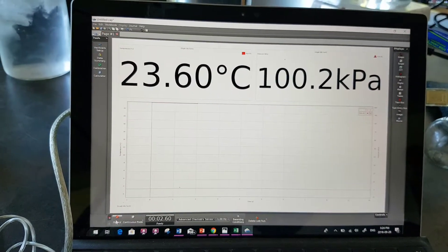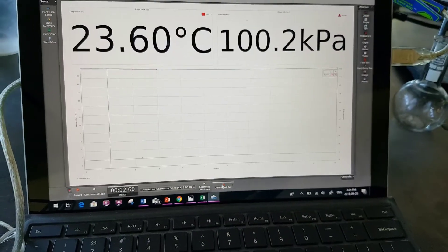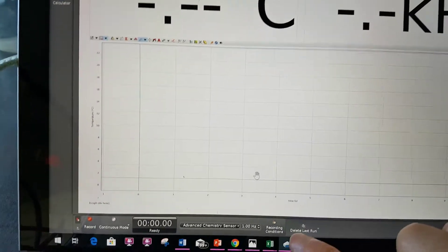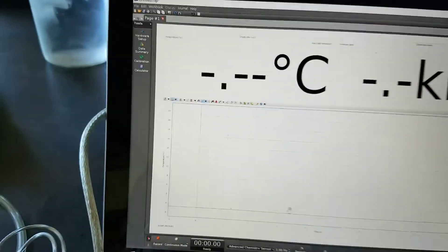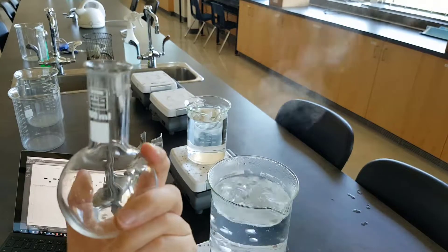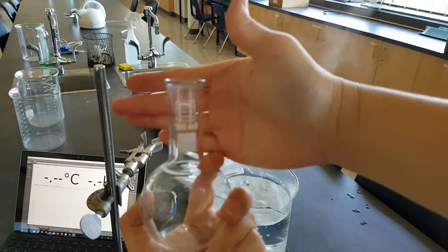You can click record to get the data, and you can click delete run so that you can restart and collect another set of data. So here's your basic setup. Now, how to collect the data.